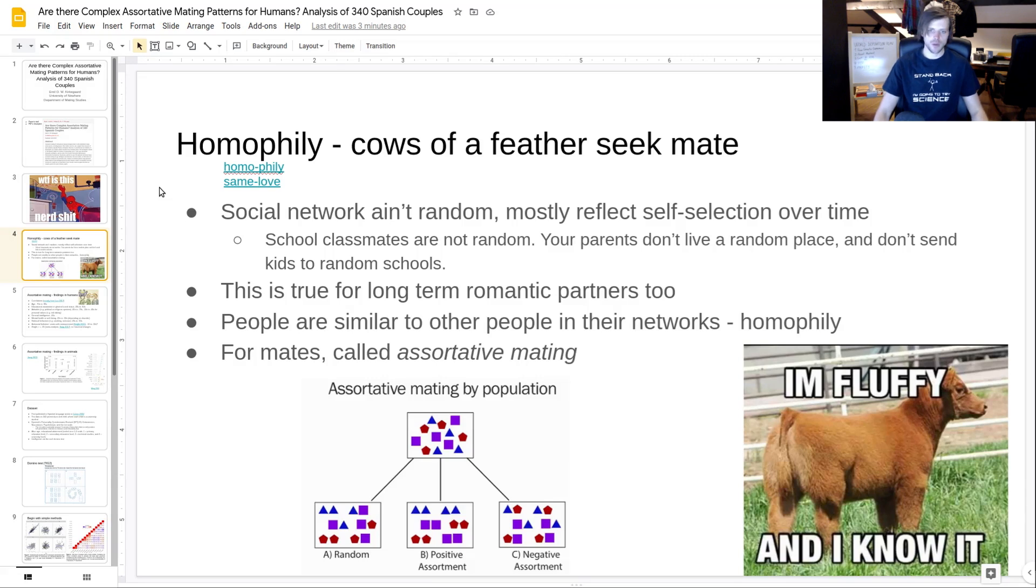You're not really following or connected to another set of humans on the planet at random. The ones you're connected to tend to be more similar to yourself. And this is, of course, extra true for long-term romantic partners. When that happens, that is called assortative mating because they tend to be more similar. You can have negative assortment where you tend to be more dissimilar, and this does exist for some rare traits, maybe for immune system stuff.